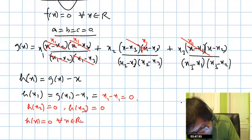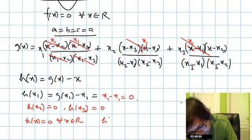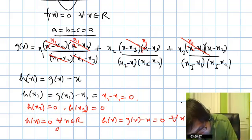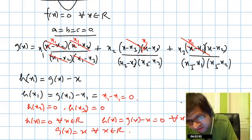That is, h(x) = g(x) - x = 0 for all x ∈ R, or we can say g(x) = x for all x ∈ R. And that means the correct choice is choice C.